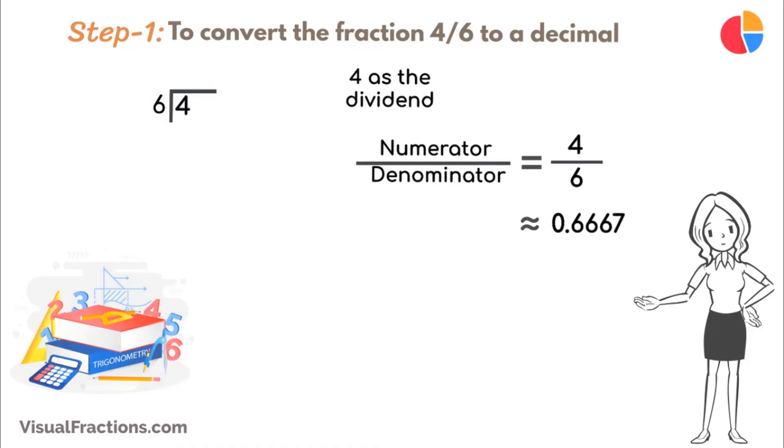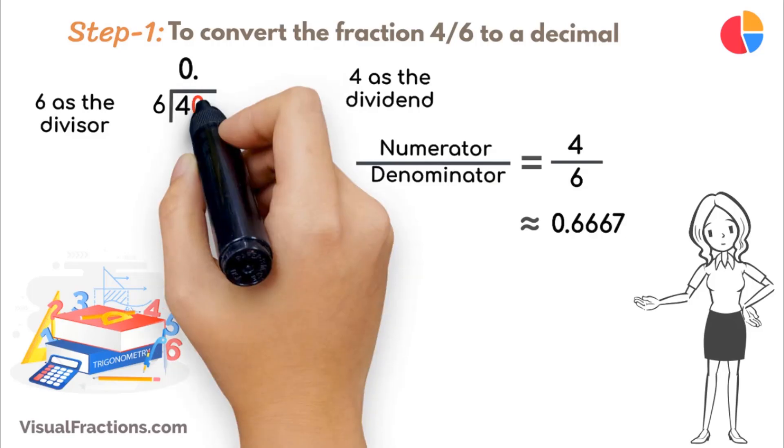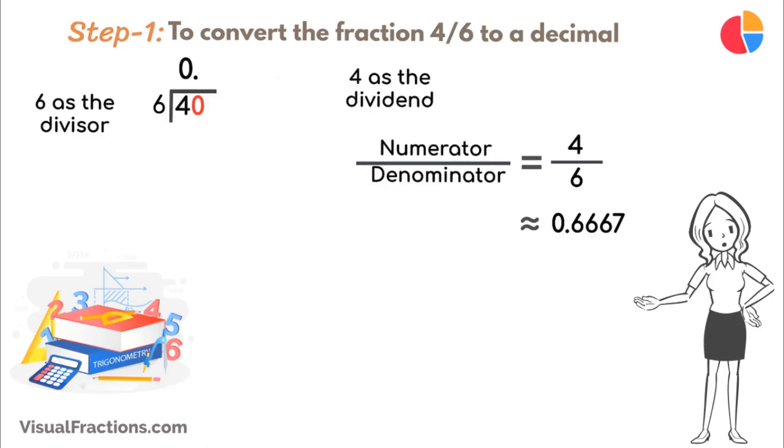Place 4 as the dividend and 6 as the divisor. Since 6 doesn't fit into 4, place a decimal point in our quotient and bring down a 0, making it 40. 6 goes into 4 six times, putting 0.6 in our quotient. Multiply 6 by 6 to get 36, and subtract this from 40, leaving a remainder of 4.